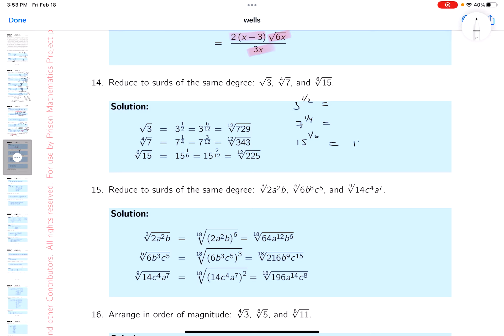So I'm gonna say 15 to the 2/12, this would be 7 to the 3/12, and this one over here is gonna be 3 to the 6/12. Now certainly I'm gonna write these as all 12th roots.